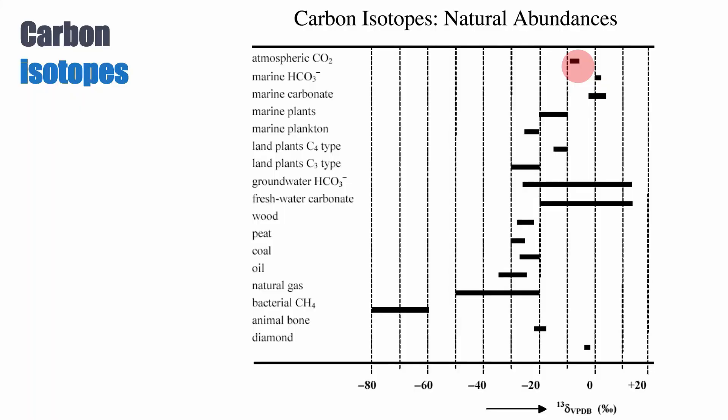We haven't really talked about carbon isotopes yet. Carbon can be a bit more complicated. The ultimate source of carbon is the mantle, and it's volcanic degassing. That source is at roughly minus 5 per mil PDB, so slightly negative.